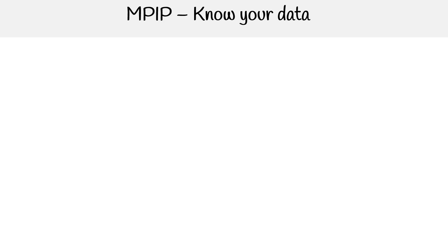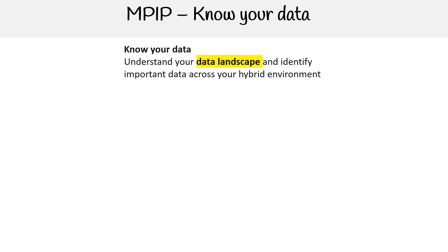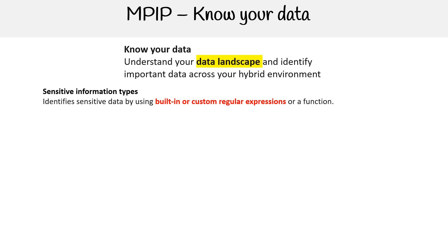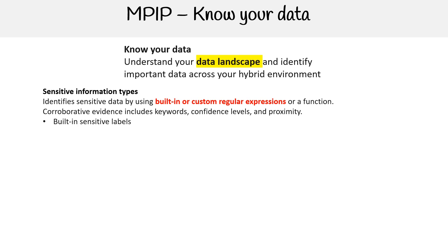Taking a look at the four domains for Microsoft Purview Information Protection — these are features found within Microsoft Purview. The first is Know Your Data: understand your data landscape and identify important data across your hybrid environment. One feature is Sensitive Information Types, which identifies sensitive data using built-in or custom regular expressions or a function. It provides corroborative evidence including keywords, confidence levels, and proximity. You have built-in sensitivity labels and custom ones as well.